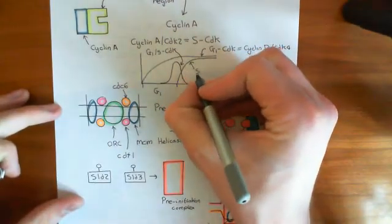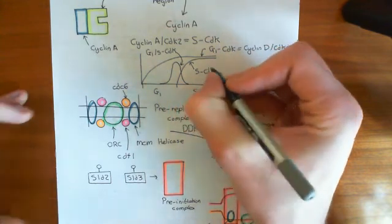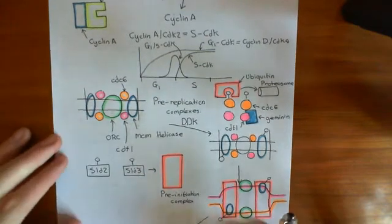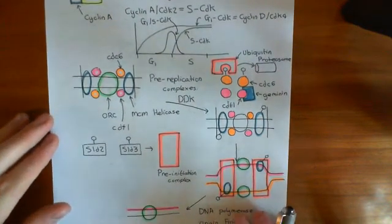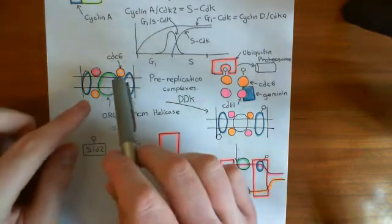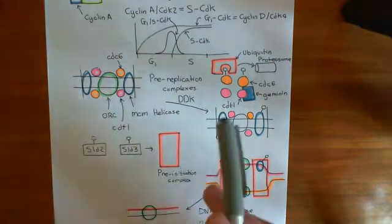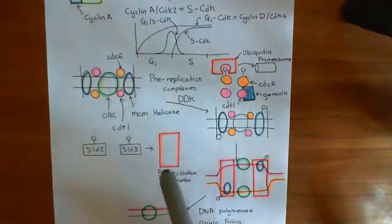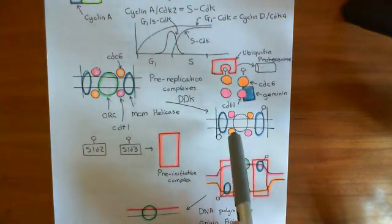This graph shows the level of the S CDK. What the S CDK does is it alters the pre-replication complex by phosphorylating CDC6, which causes it to cleave off and then be ubiquitinated and destroyed by the proteasome. When CDC6 cleaves off, CDT1 also cleaves off.